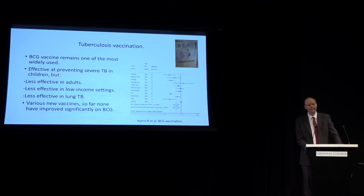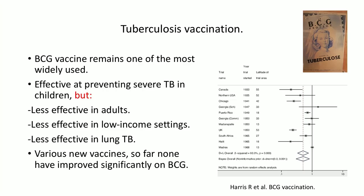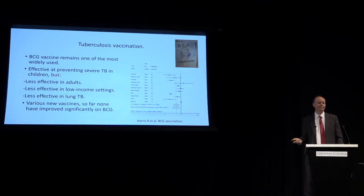We can vaccinate against TB with BCG — almost all of you will have had this, the oldest and most widely available vaccine. It is moderately good: very effective at preventing severe TB in children in high-income settings, as UK trials showed. However, it is not very effective in adults in low-income settings, as demonstrated by trials in India. BCG is worth having, but we need to improve on it. Multiple attempts to develop better vaccines have so far not significantly improved on BCG in large field trials.